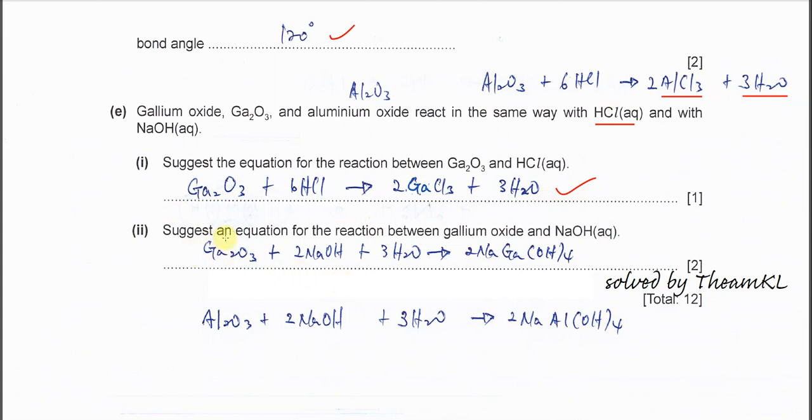Part two. Suggest an equation for the reaction between gallium oxide and sodium hydroxide. This one is also similar to what you learned. Aluminium oxide with NaOH with water form this compound. So gallium oxide will do the same thing and form this equation.